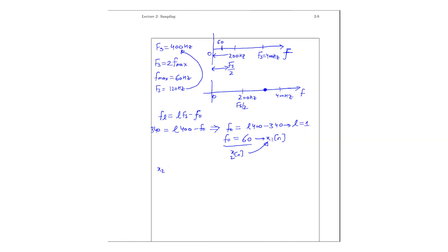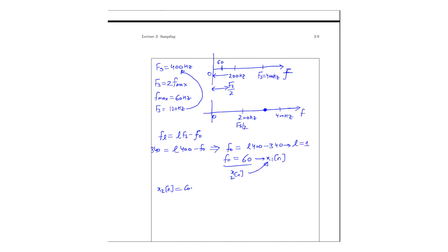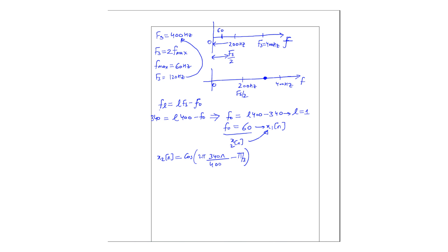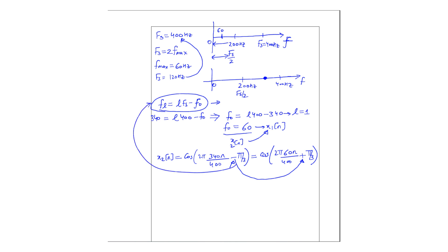Note that x2(n) is originally defined as cos(2π·340·n / 400 − π/3). As discussed earlier, when using this expression there is a change in the phase. The change in phase means we have minus π/3 here. So the principal alias will be cos(2π·60·n / 400 + π/3). We have changed the sign from minus to plus π/3 because we are using the aliasing expression to get the principal alias.